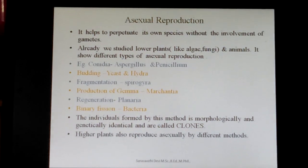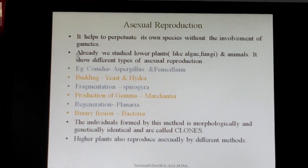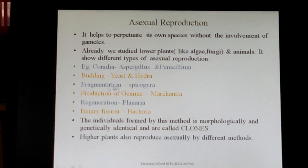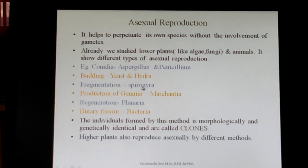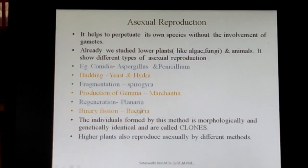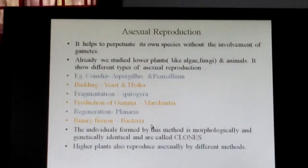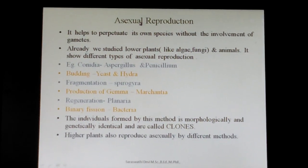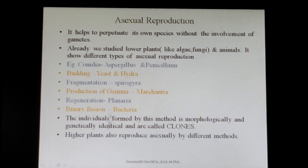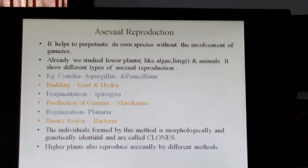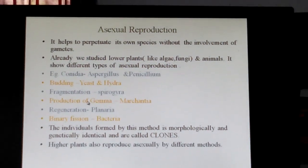The methods of asexual reproduction include: Conidia, produced in fungi such as Aspergillus and Penicillium; Budding, seen in yeast and hydra; Fragmentation in Spirogyra; Production of Gemmae in Marchantia; Regeneration seen in Planaria; and Binary fission in bacteria. In asexual reproduction, a single parent is involved and there is no gamete fusion. The individuals produced are morphologically and genetically identical, and when individuals are morphologically and genetically identical they are called clones.